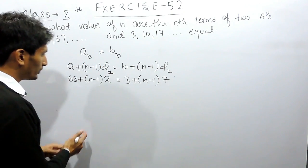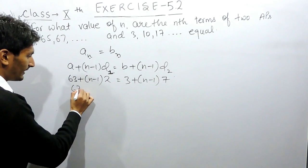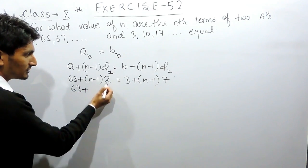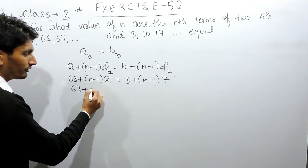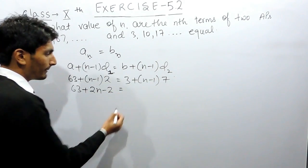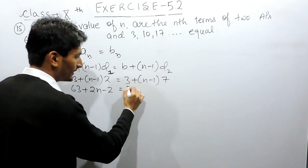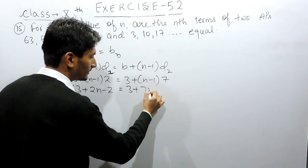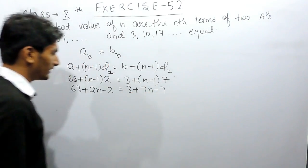Now I can solve these two equations. I can open this bracket by multiplying 2 with both the terms. 2 multiplied by n will be 2n and 2 multiplied by minus 1 will be minus 2. Similarly here also I have to open the bracket.